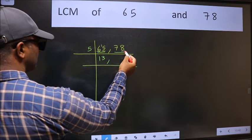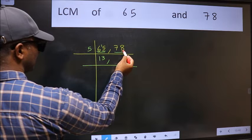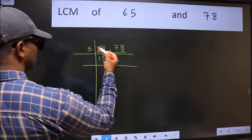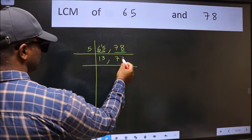The other number 78, last digit is neither 0 nor 5, so this number is not divisible by 5. So you write it down as it is.